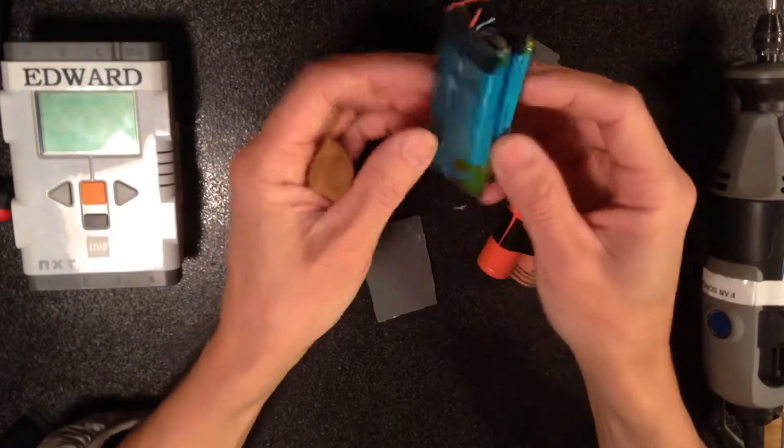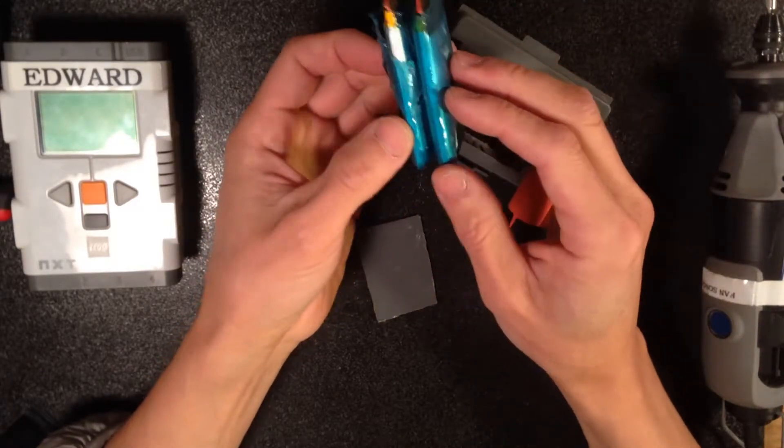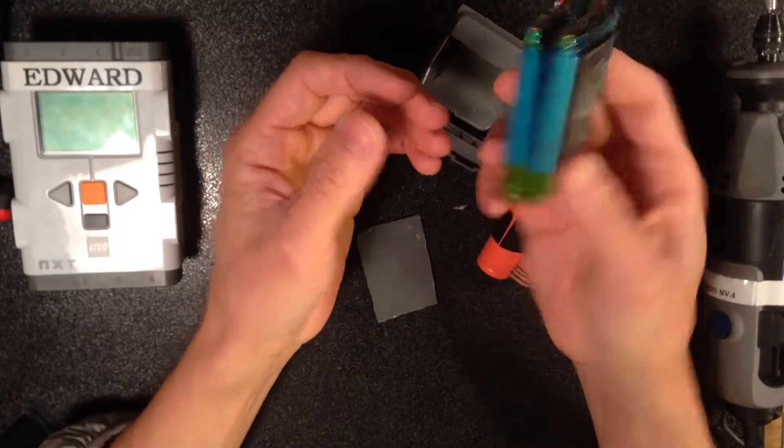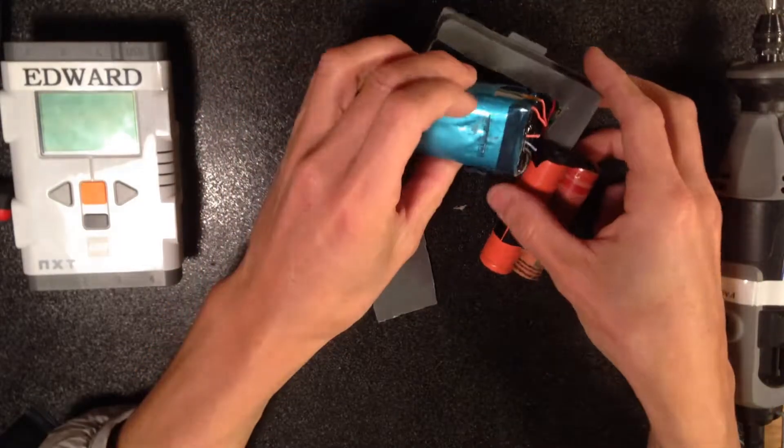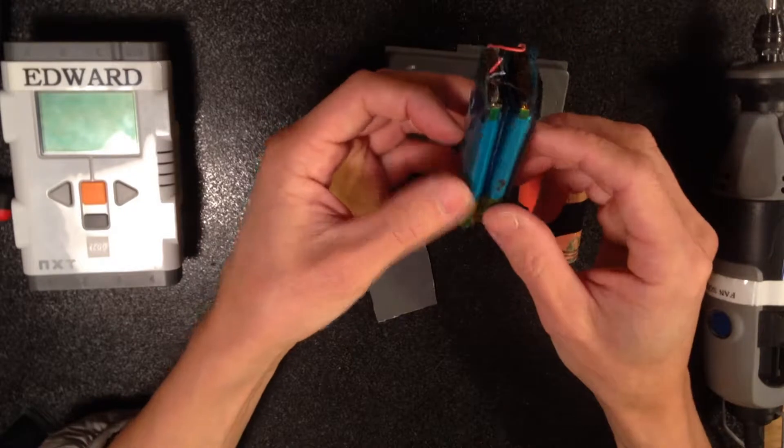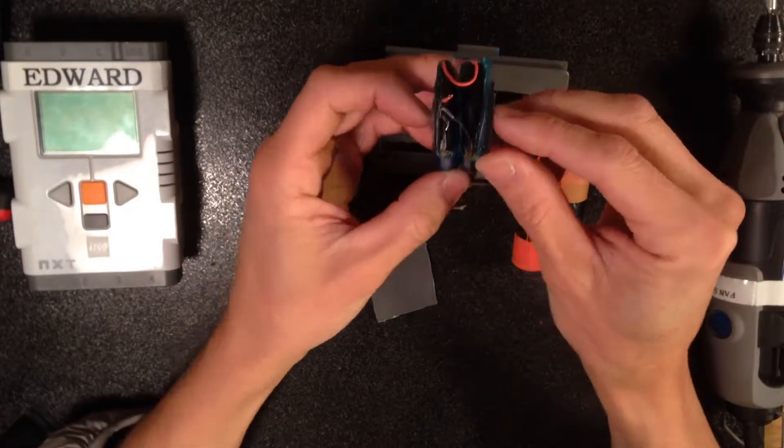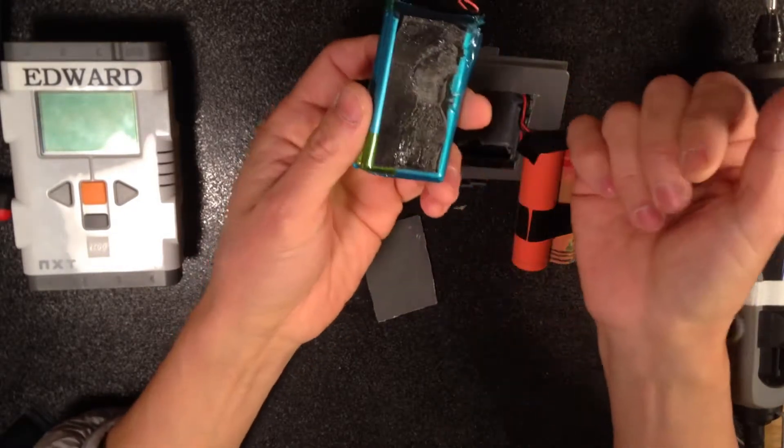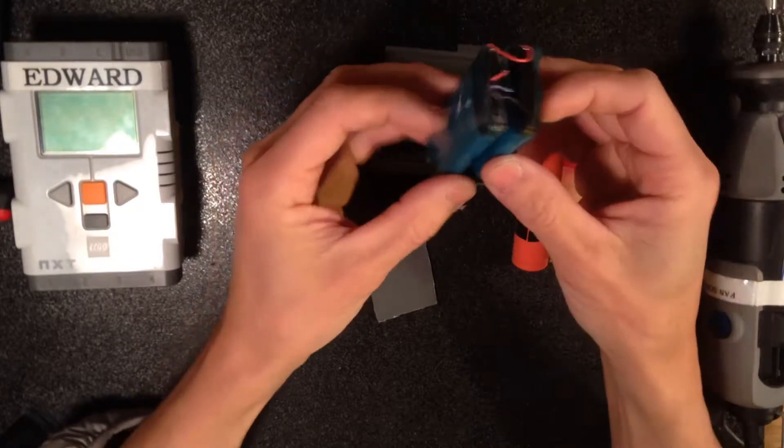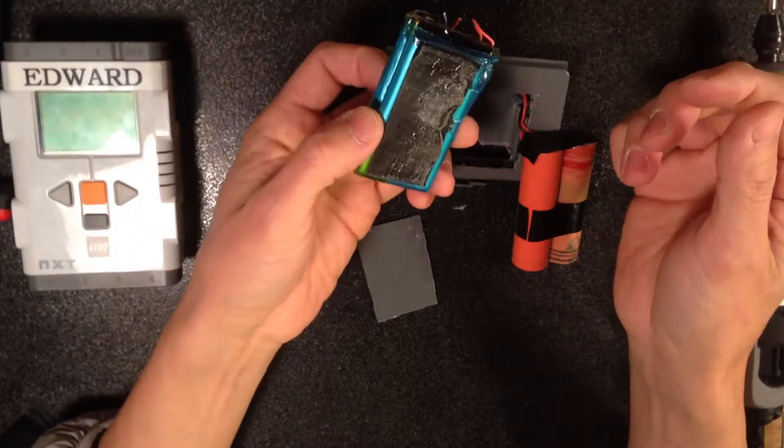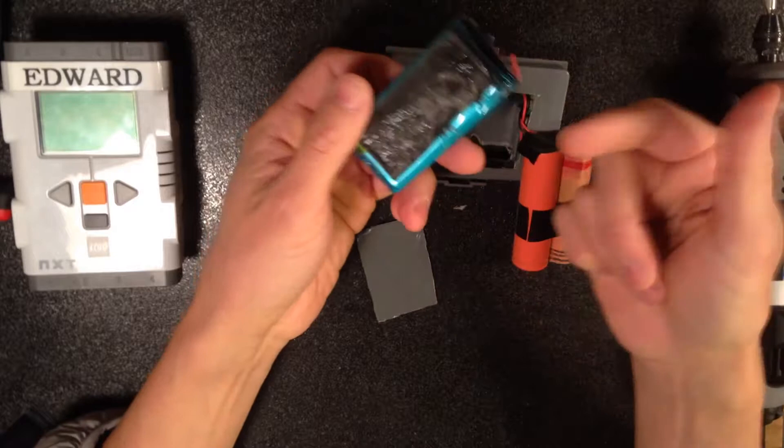As you can see, this battery pack now is very bulging and out of life. When you take out this battery pack, you have to use a little bit of force because there's a lot of double-sided tape that firmly tapes this on the floor. So after you take this out.